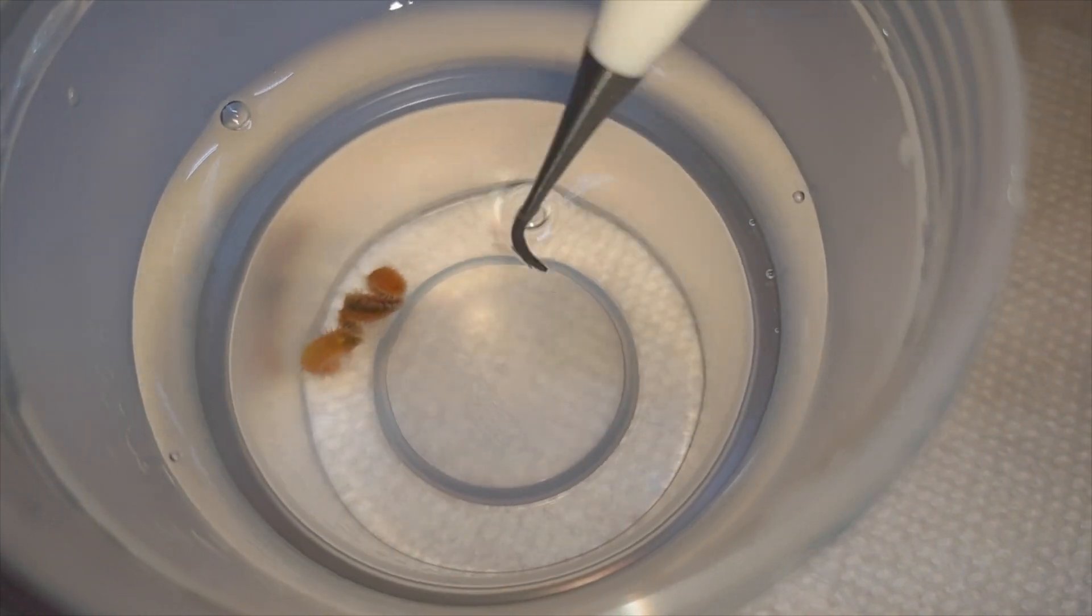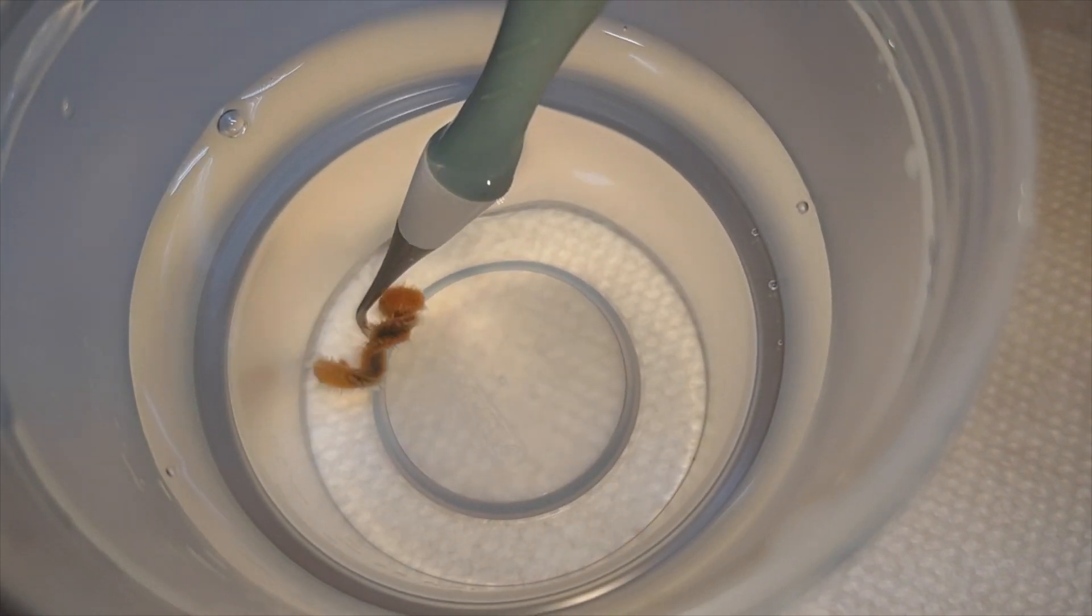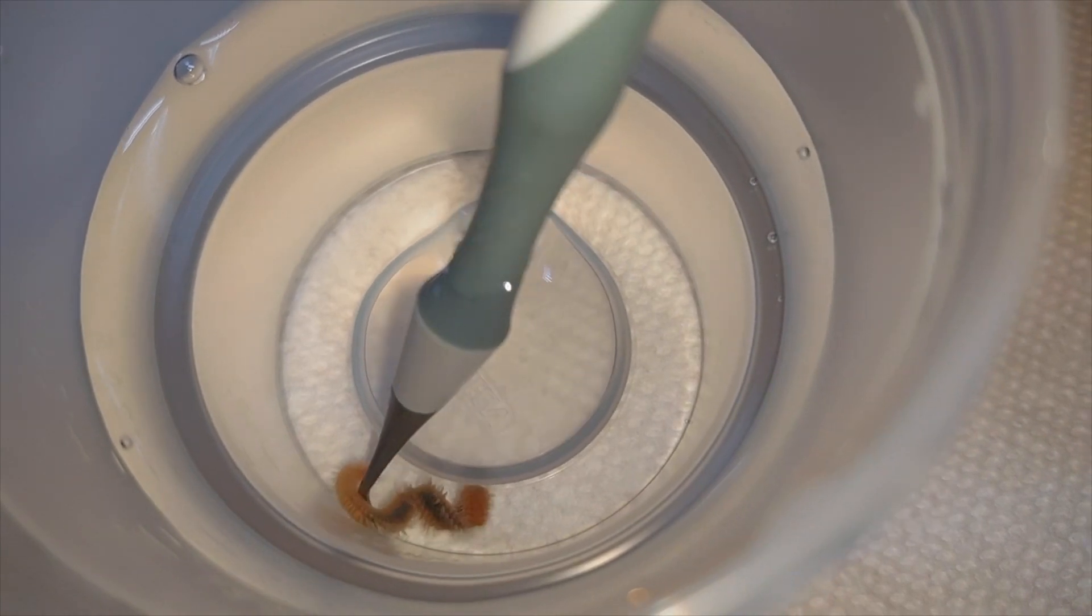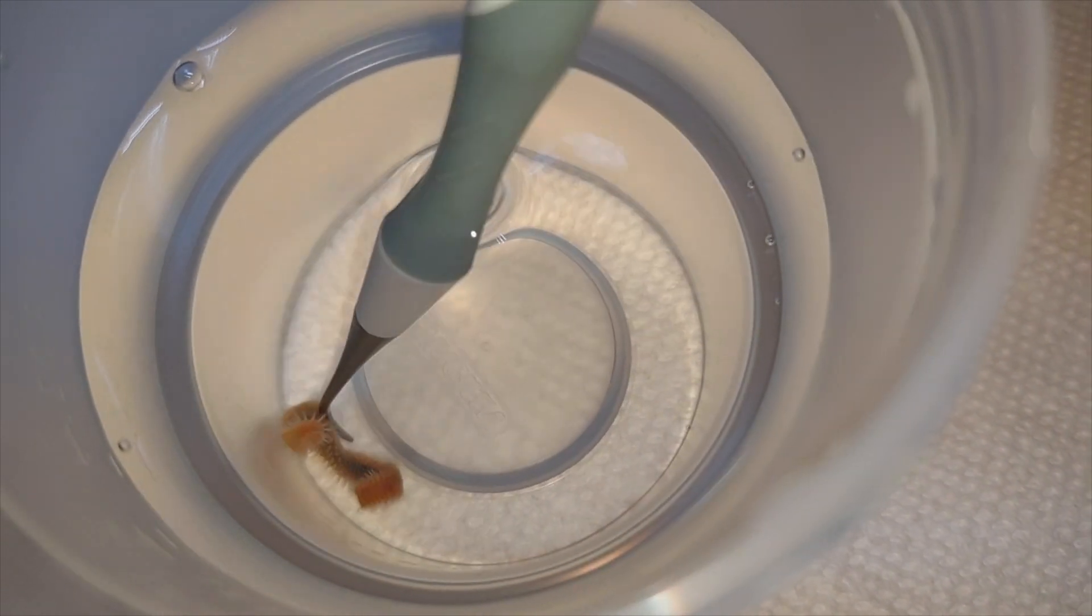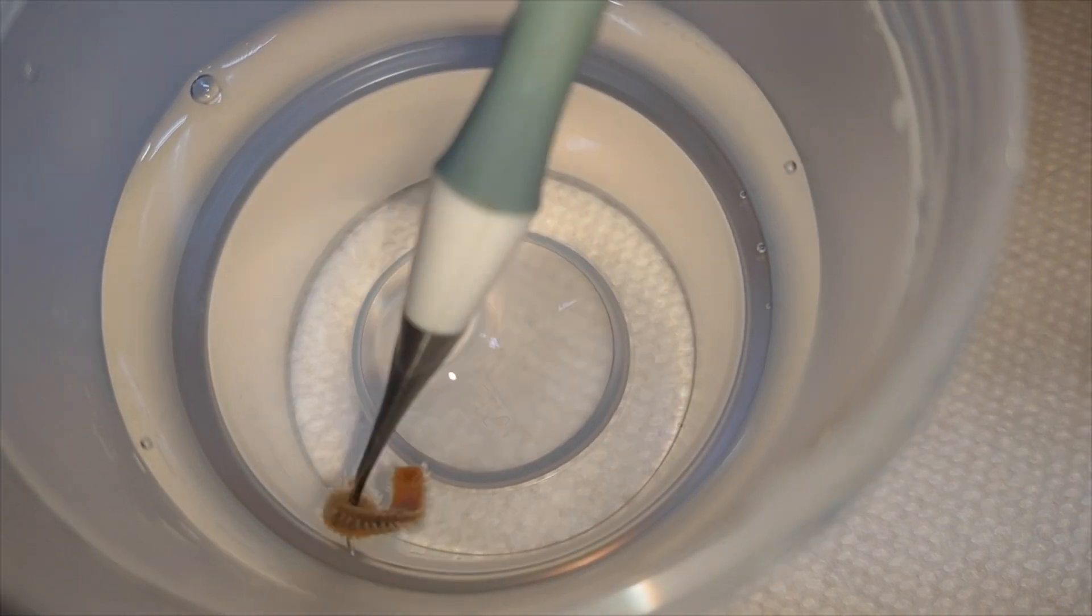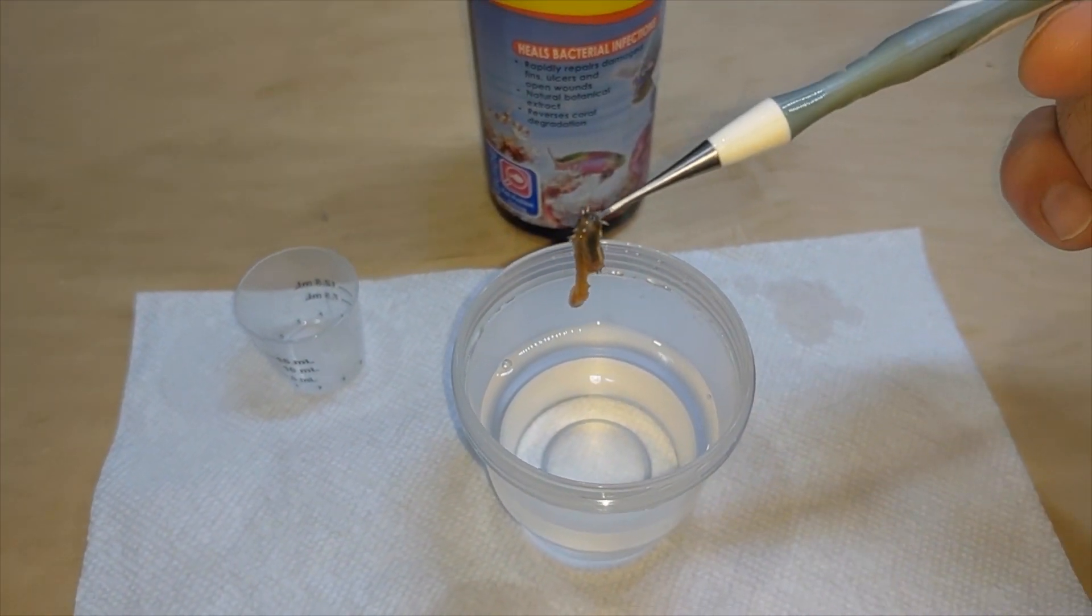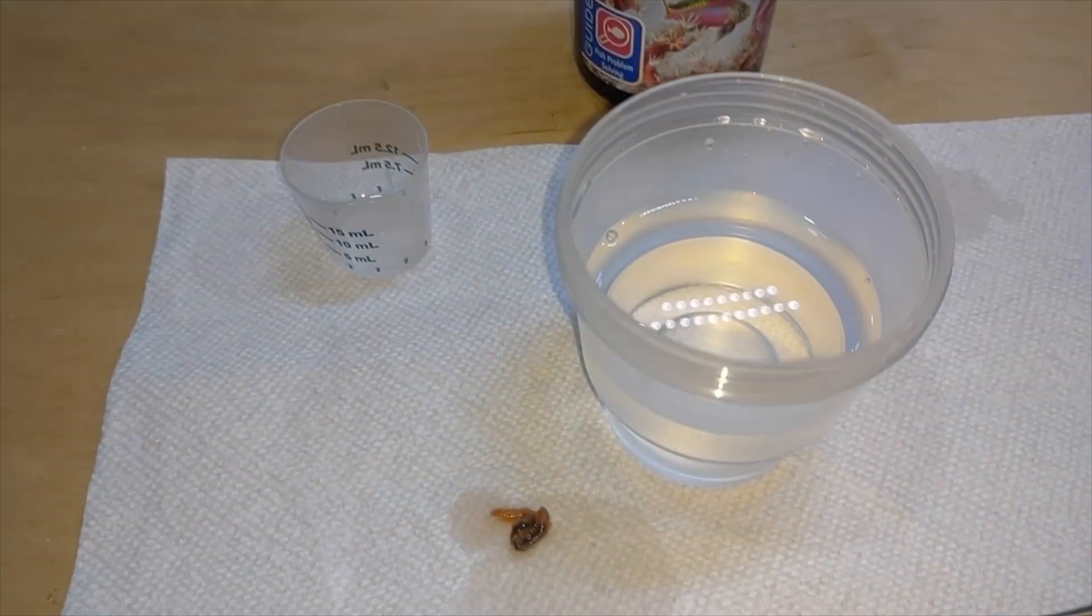Look at this - so if this was on a frag in here and you hit the frag with the turkey baster, this thing would just fall right off. Barely any movement whatsoever. Look at that thing - done! This thing is done. That's what I'm talking about.